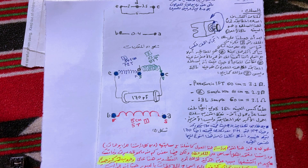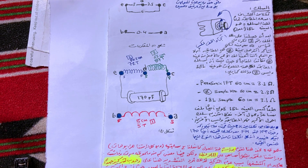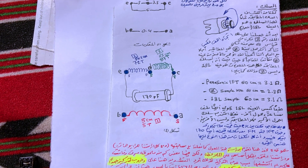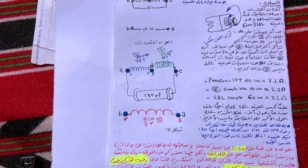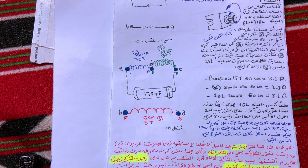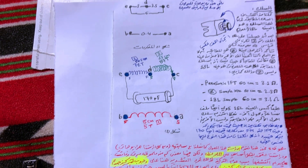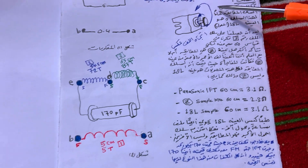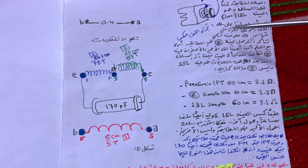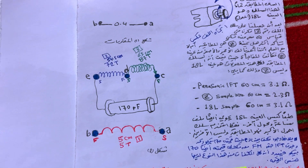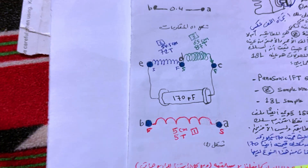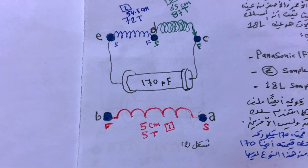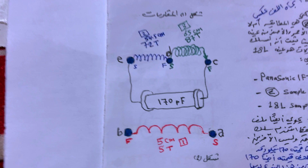Suppose we want to create an IFT with the following characteristics. First, we know the winding direction is anticlockwise, and we know the coil setup.